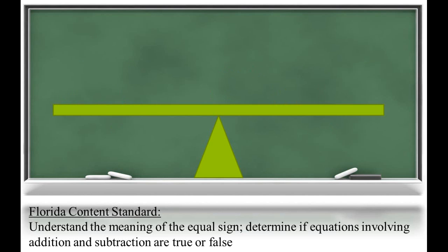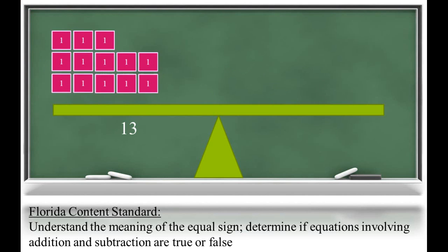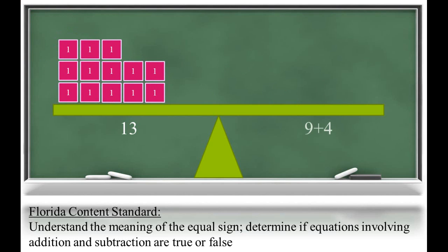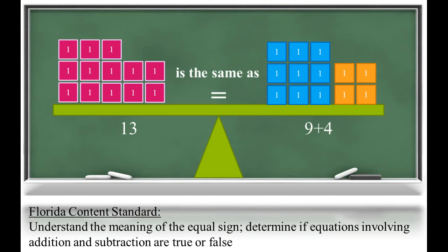Sometimes an equation will show a single value on the left side and an expression on the right side. These two values are equal because 13 means the same as 9 plus 4. Students will have multiple hands-on opportunities to explore the meaning of the equal sign using balances.